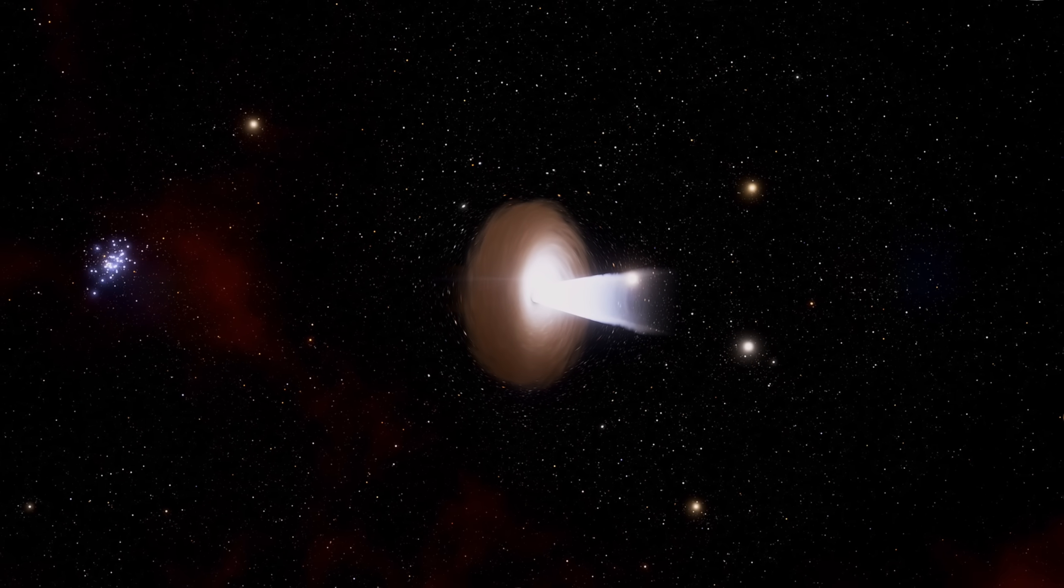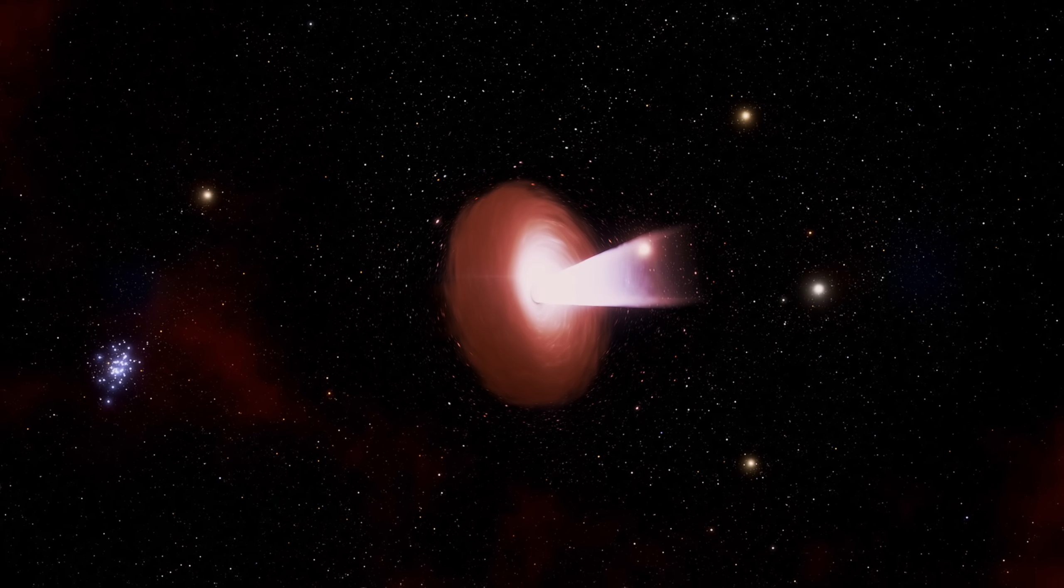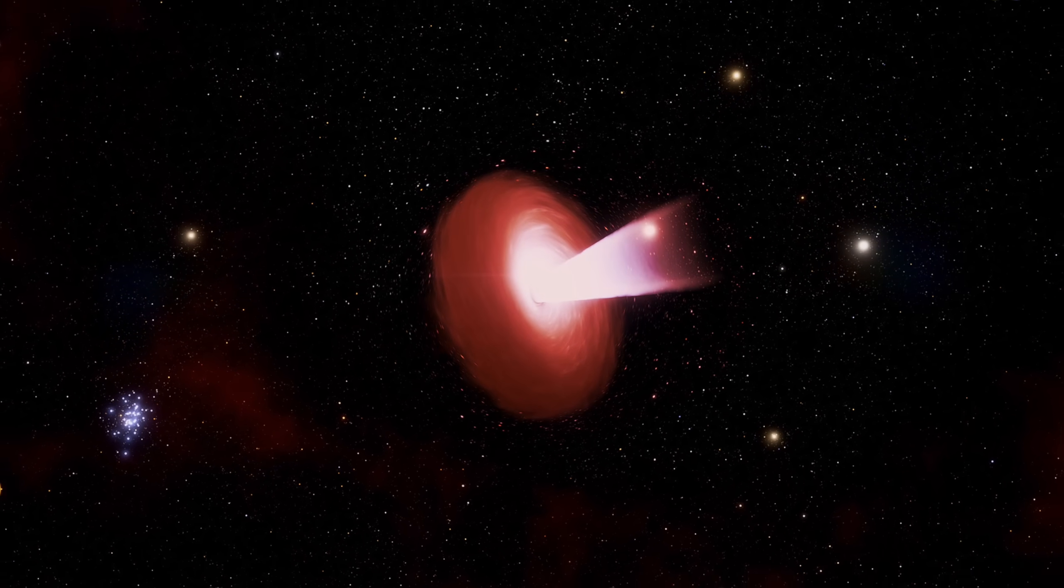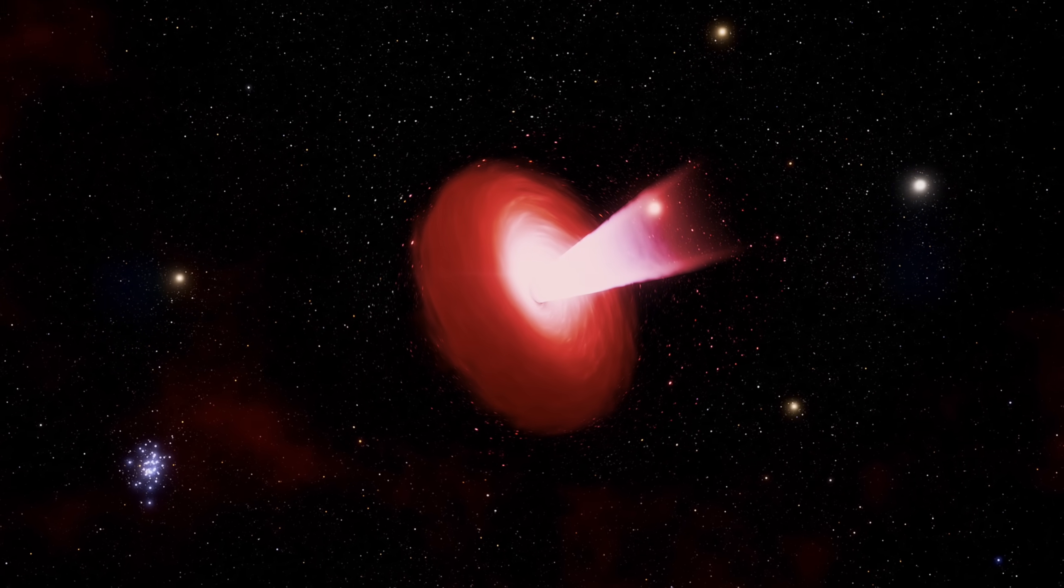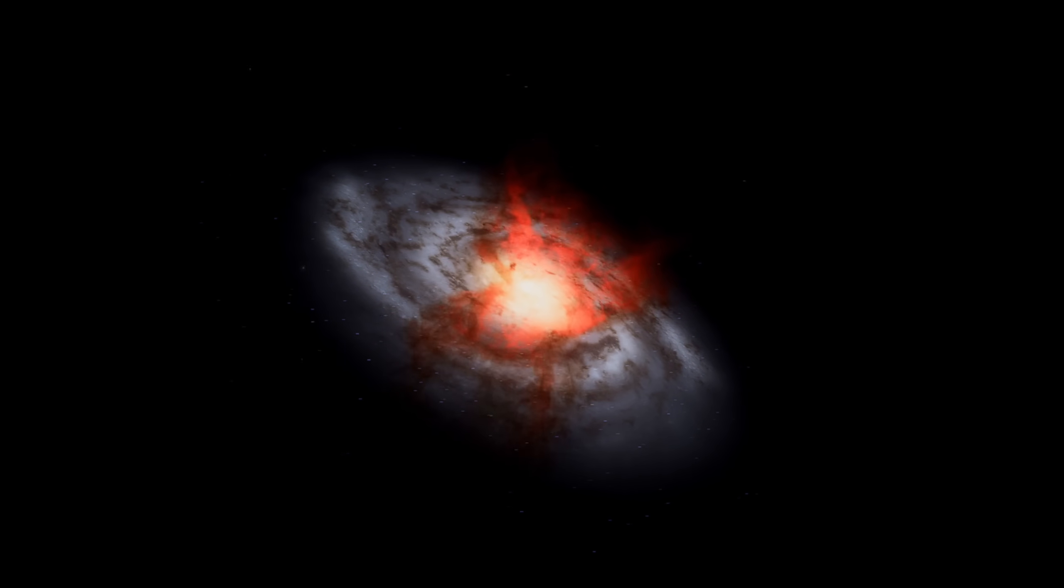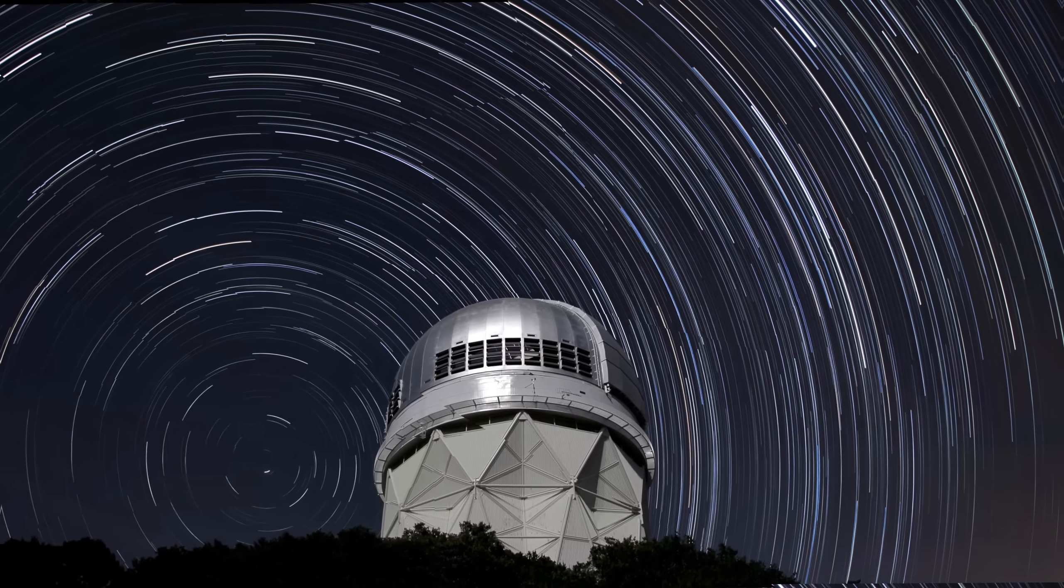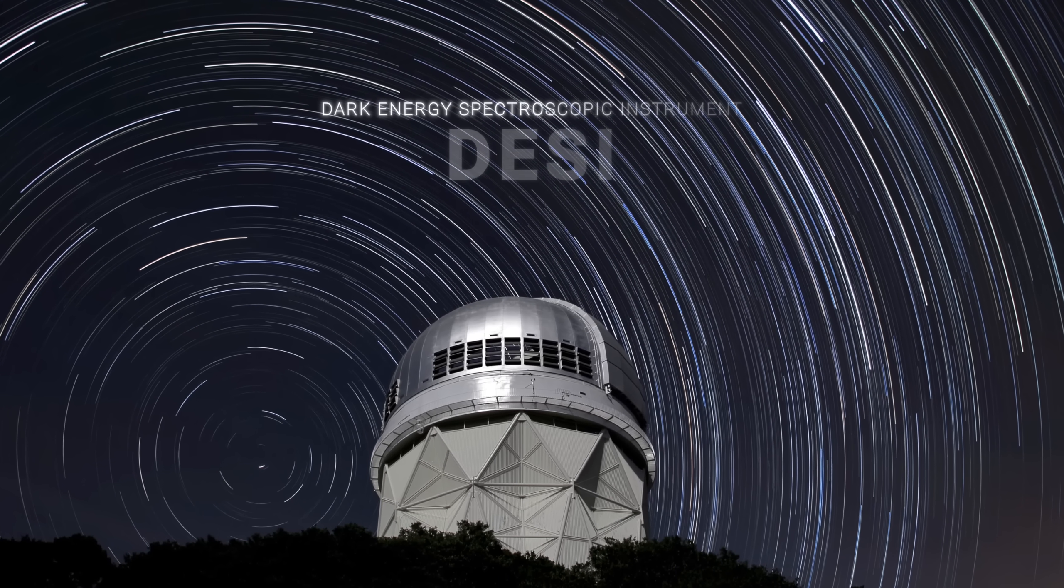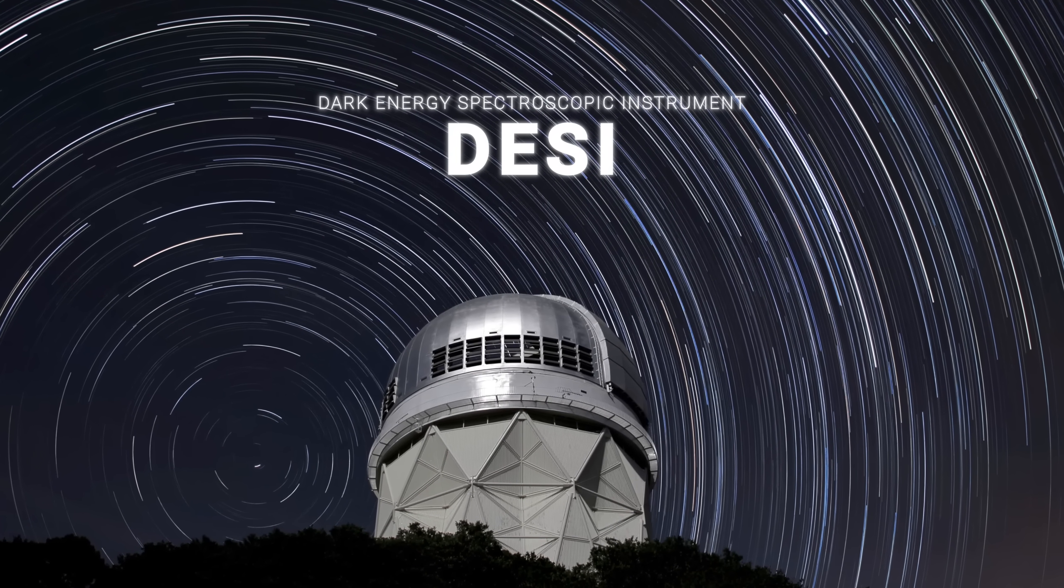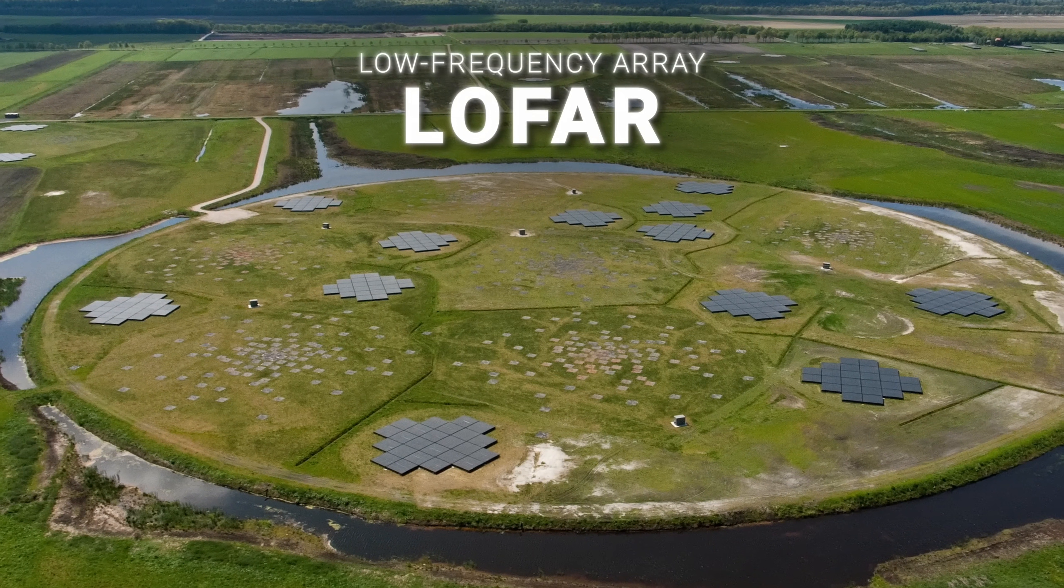The redness observed in these quasars is a direct effect of the dust that surrounds them. The dust absorbs shorter, blue wavelengths of light, and lets in longer, red wavelengths. This phenomenon not only changes its appearance, but also enhances radio emission, as shown by recent studies using data from the Dark Energy Spectroscopic Instrument, or DESE, and LOFAR, which is a low-frequency array.